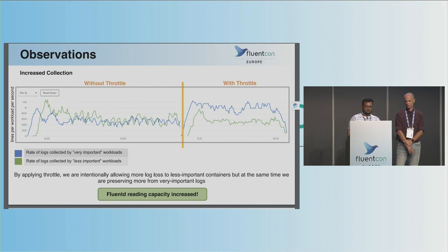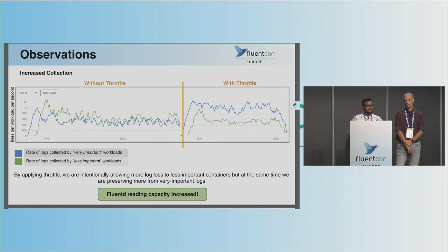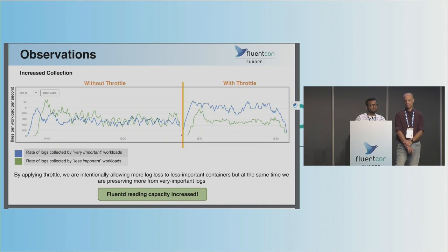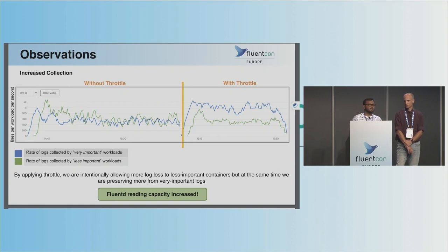In these experiments we have two cases: one without Throttle (normal situation) and one with Throttle applied to less important containers. Without Throttle, the collection rate from each group is roughly the same. But when you apply Throttle on less important containers, the collection rate for important containers — the blue graph — increases, while the green graph is controlled as configured. During exceptional situations, you preserve more logs from important containers while proactively dropping from others, staying current with what is happening in your system.